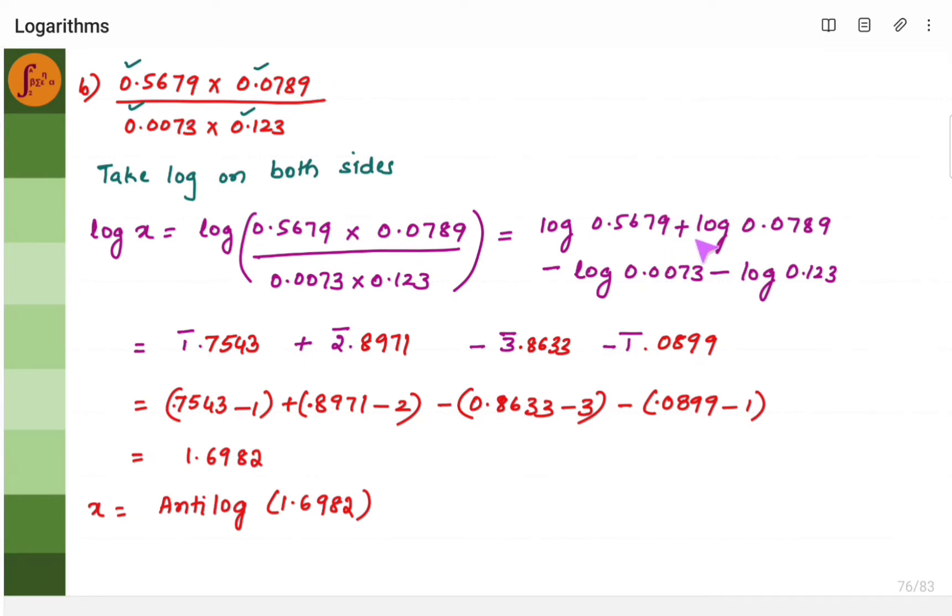So when you find the log value, you're going to get negative characteristic. Obviously, say you have 0.07 here. Where is a non-zero number? It's in second place. So what is the characteristic? It will be 2 and it's going to be minus 2 because this number is less than 1. So minus 2.